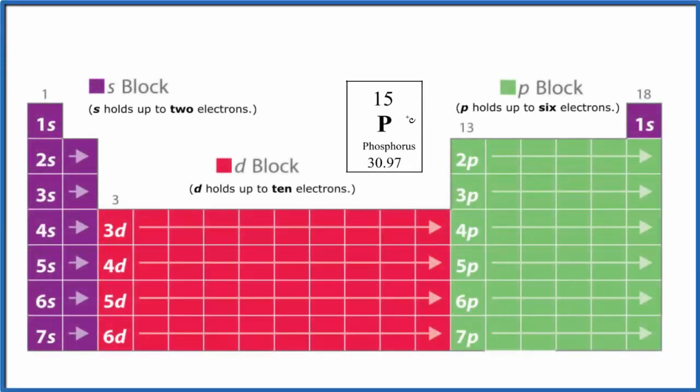Let's write the atomic orbital diagram for phosphorus. The first thing we need to do, we need to write the electron configuration for phosphorus before we can do the orbital diagram.